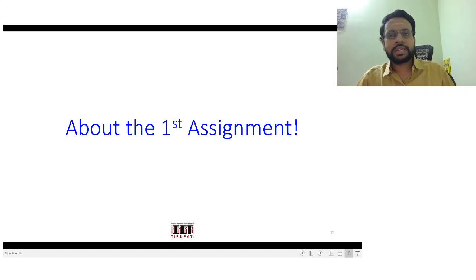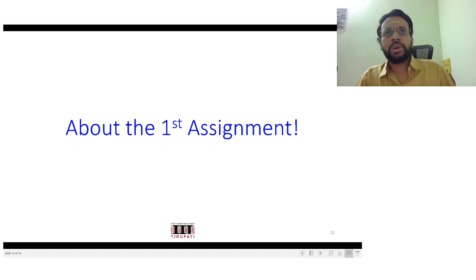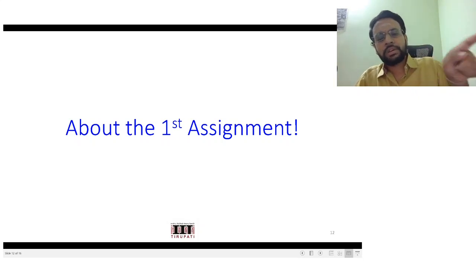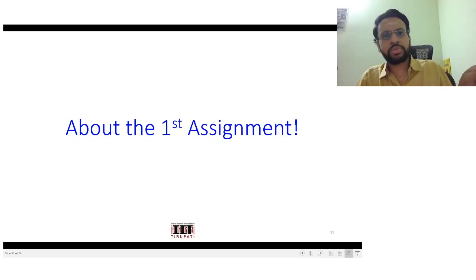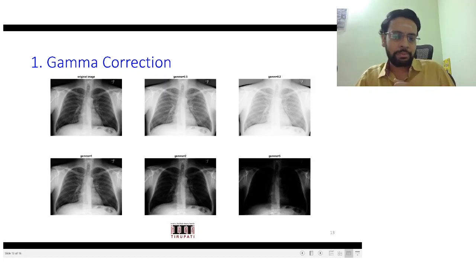That's all for image enhancements using intensity transformations — these are all point transformations. From the next video lecture onwards we will go to neighborhood-based image transforms, where you would use kernels — also referred to as convolution or correlation based image transforms — where you not only look at the intensity of that particular pixel but also take its neighborhood pixels into account.